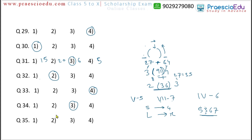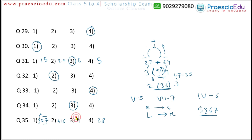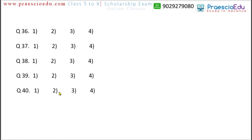Question 35: option 1 shows 3 and 27 (3 cubed = 27), option 3 shows 1 and 1 (1 cubed = 1), and the pattern uses cube numbers. But option 2 shows 4 and 16 — 16 is the square of 4, not the cube. So option 2 is the different one for question 35.